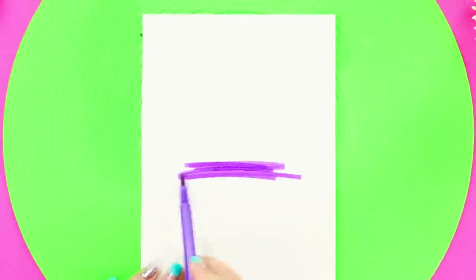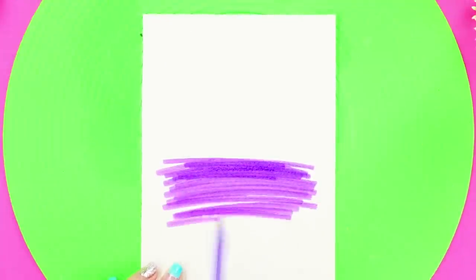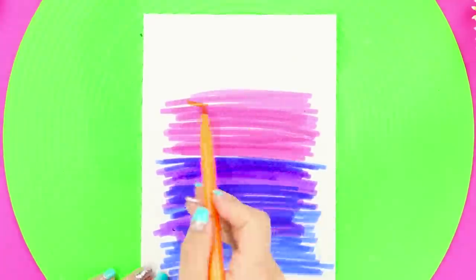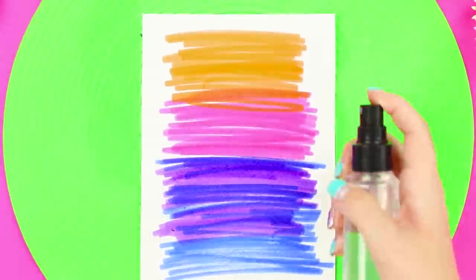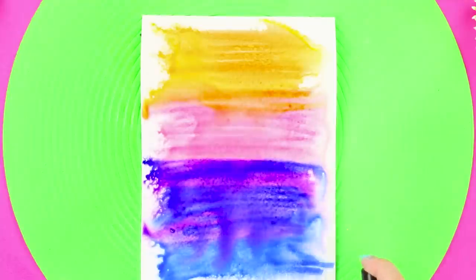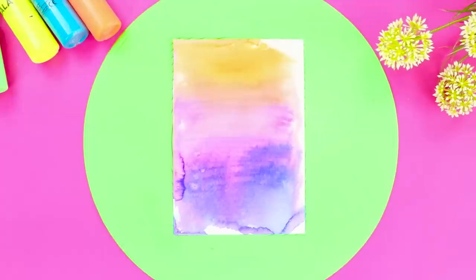And for this idea, take some markers. Begin to color in the lower part of the paper with purple. And use warm shades closer to the top! Apply strokes in a hurry like this! Now take a spray bottle with water and spray the picture. The colors start to blur! The result is a spectacular and beautiful gradient!